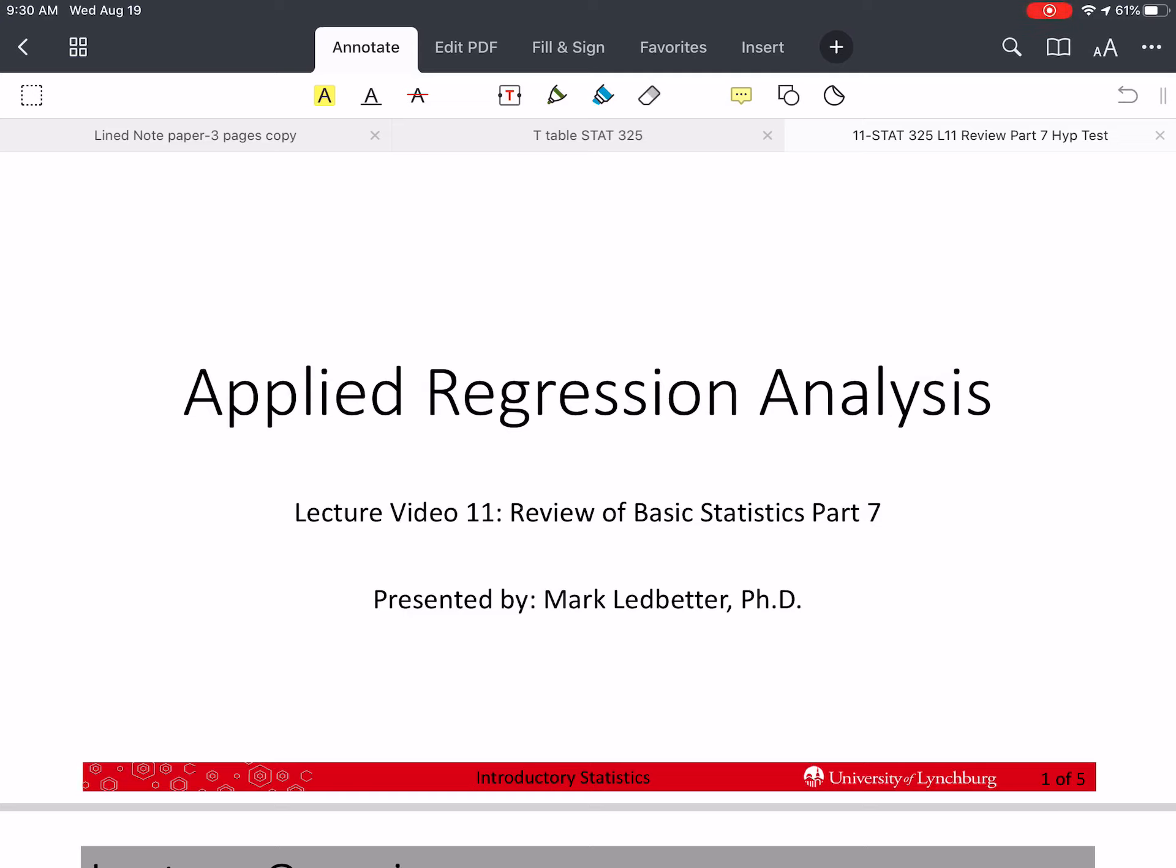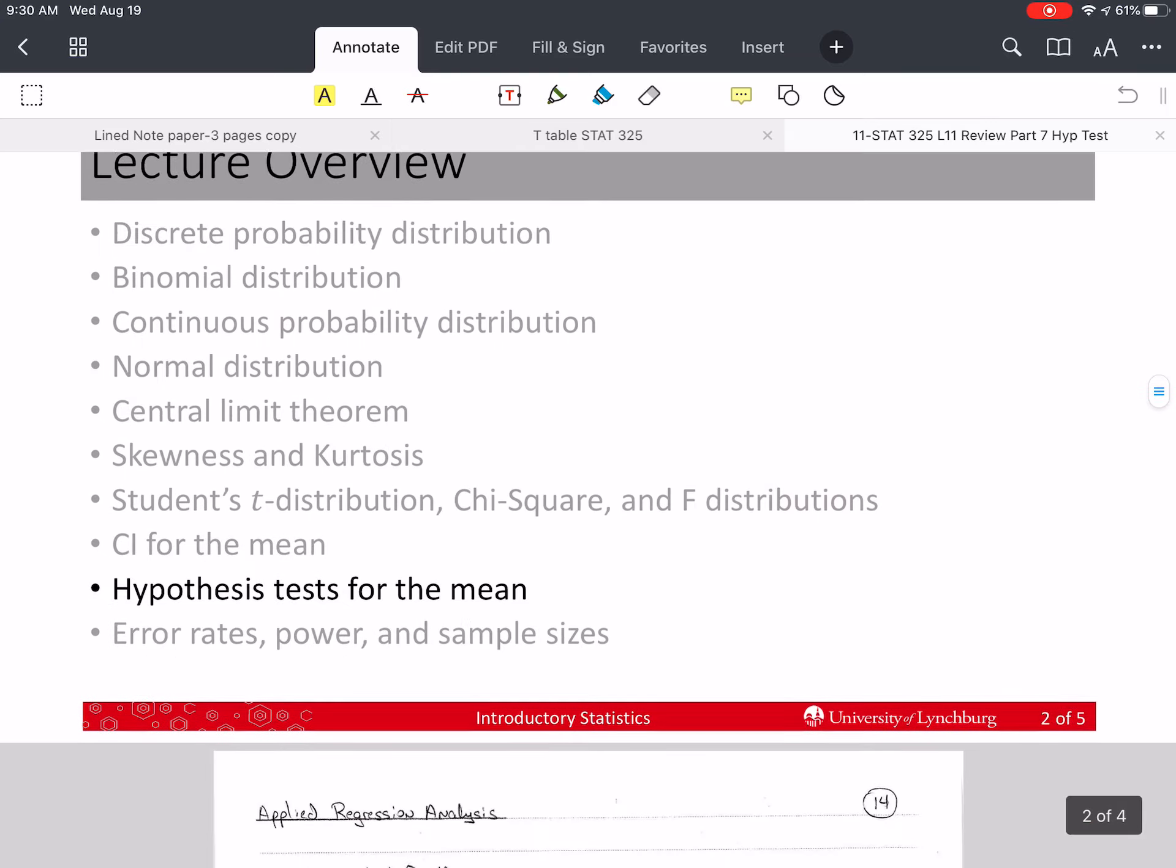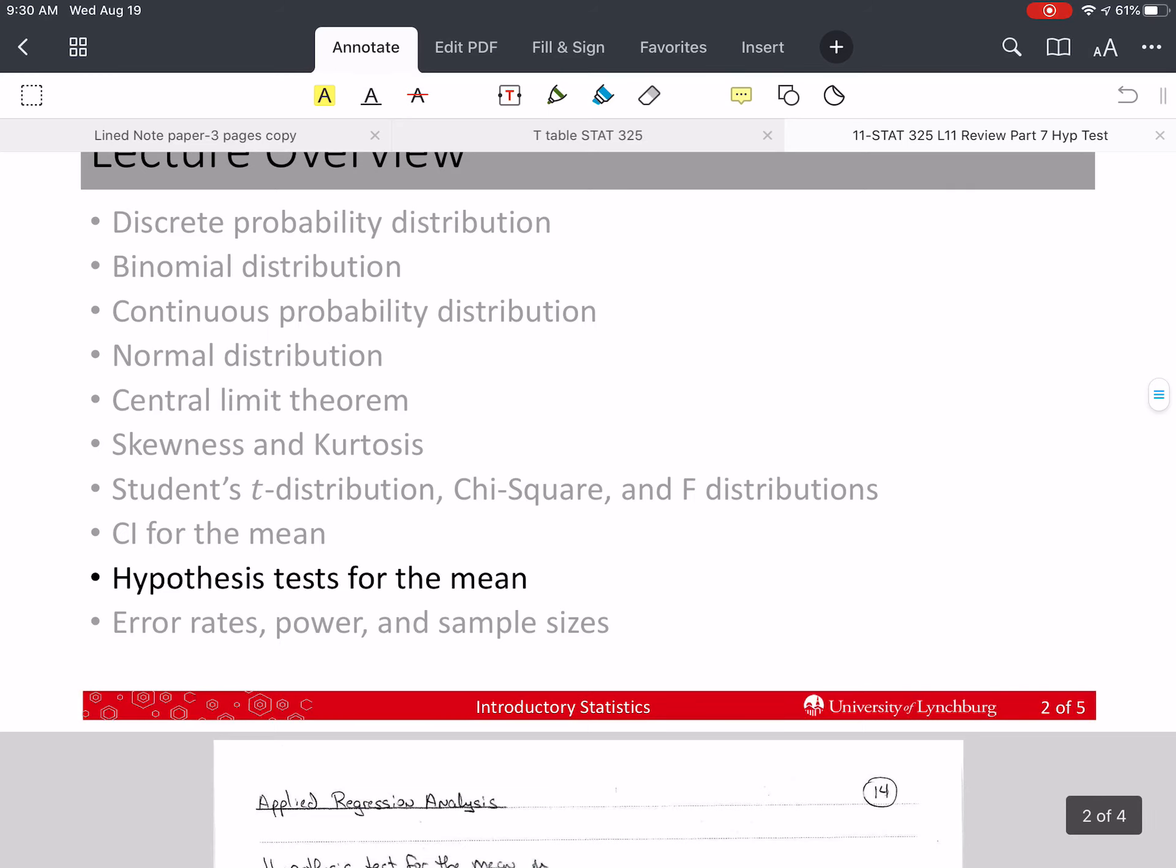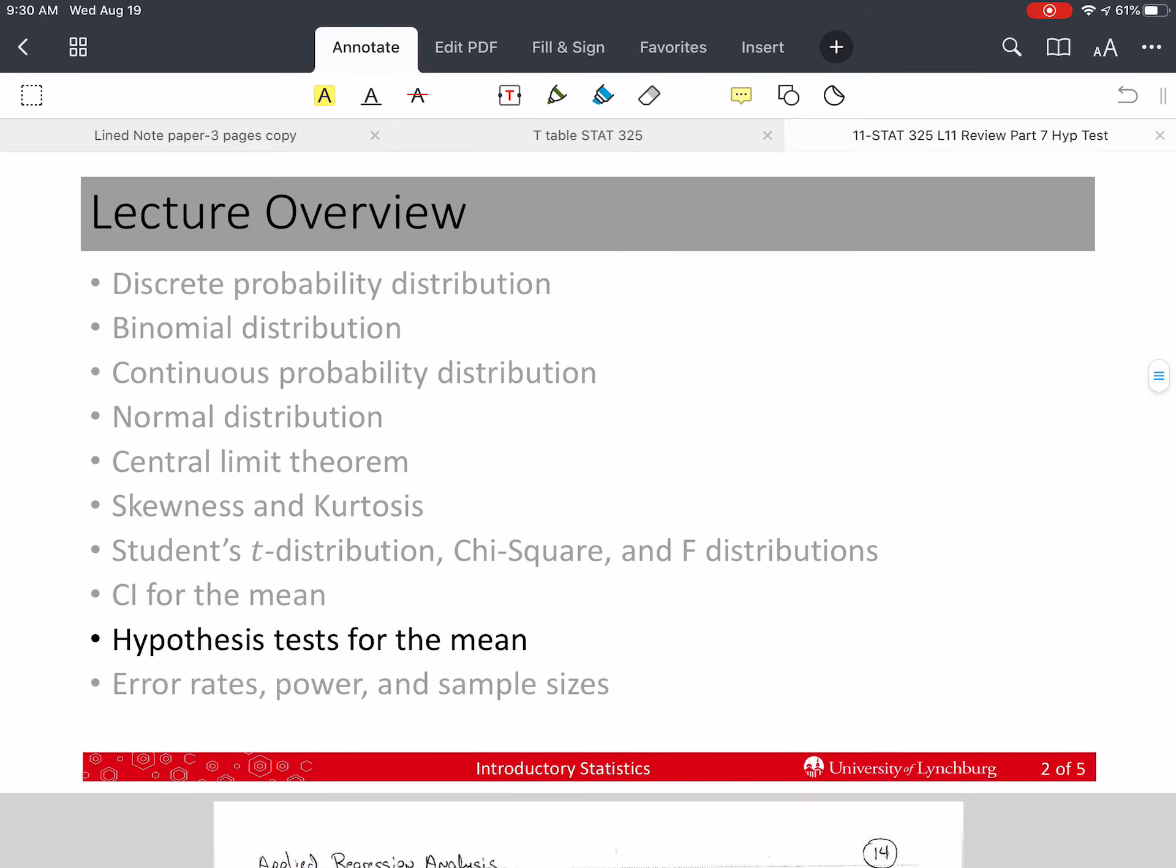Welcome back to our series on Applied Regression Analysis. I'm Mark Ledbetter, and this is Lecture Video 11. We're reviewing basic statistics, and this is Part 7. We are going to review the hypothesis test for the mean, and we're going to do an example.